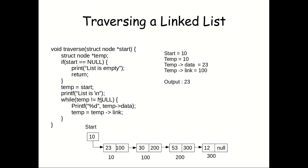In the first node we have value 23, so temp->data is 23 and temp->link is 100. It will print temp->data, which outputs 23. Then we change temp to temp->link, so temp->link here is 100 and the next value of temp becomes 100.